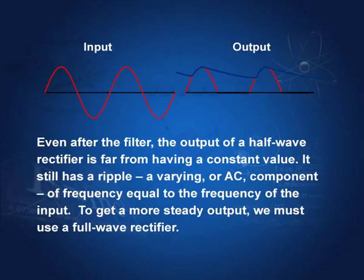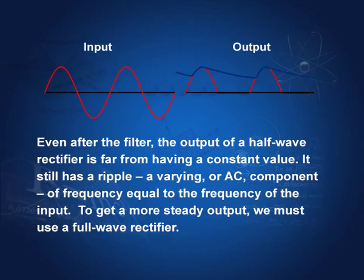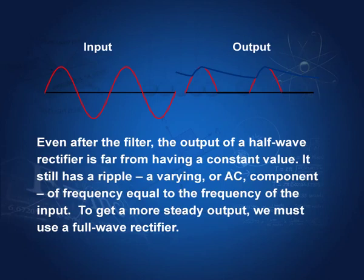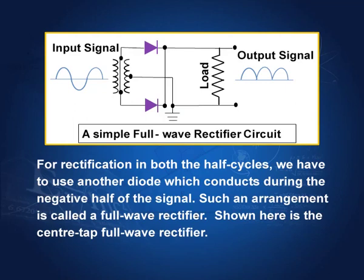The variation in the output is called the ripple factor — it has a varying AC component with a frequency equal to the frequency of the input. If we want a better output, we rectify both the positive and the negative portions. This is called a full-wave rectifier. The circuit uses two diodes and a center tap. When the signal is positive, one diode conducts; when it becomes negative, the other diode conducts. So we have output during both the positive and the negative half cycles.